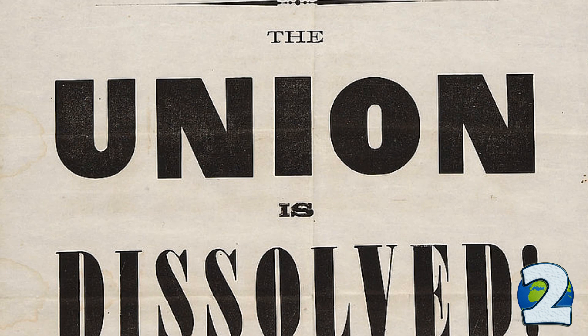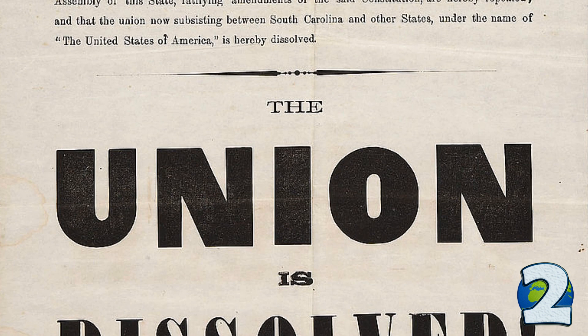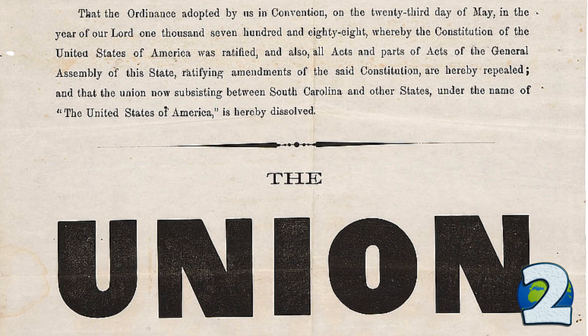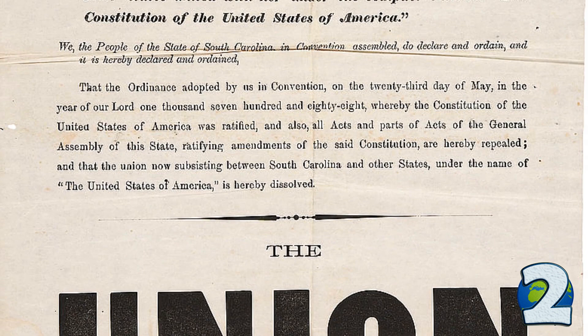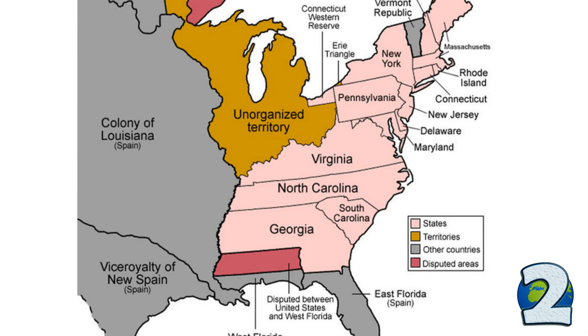So what happened — how did it come to this? There are no exact answers, of course, but the war wasn't exactly a surprise to anyone. There was an escalating political tension throughout the country that started decades earlier but intensified in the 1850s. It's safe to say that slavery was at the heart of the problem, and this issue goes all the way back to the early days of the Union.